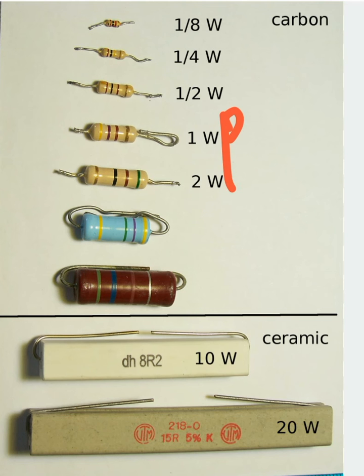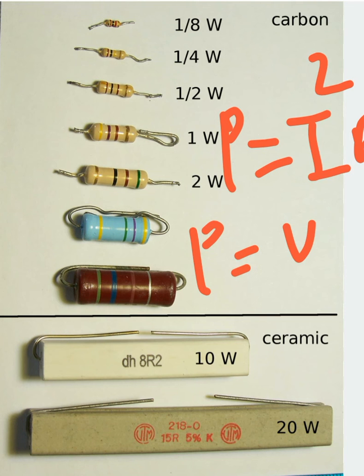That power is given as the current that is flowing through the resistor, the square of that current, multiplied by the resistance value. Or it can also be given as, if you applied a voltage across a resistor, voltage square divided by the resistance value.